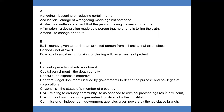C. Cabinet: Presidential Advisory Board. Capital punishment: the death penalty. Censure: to express disapproval. Charters: legal documents issued by governments to define the purpose and privileges of corporations. Citizenship: the status of a member of a country. Civil: relating to ordinary community life as opposed to criminal proceedings, as in civil court.